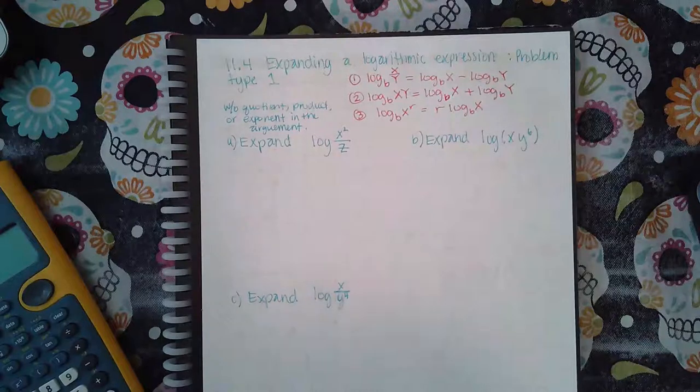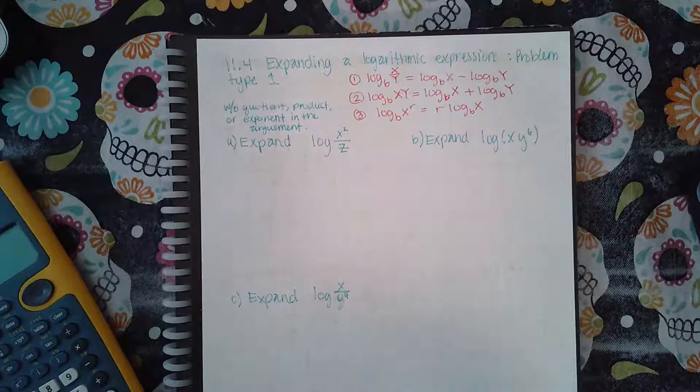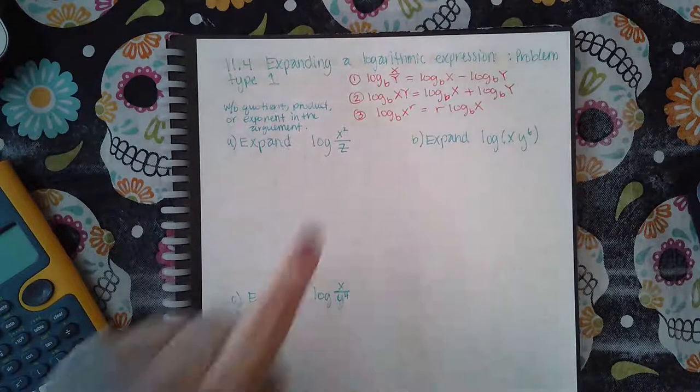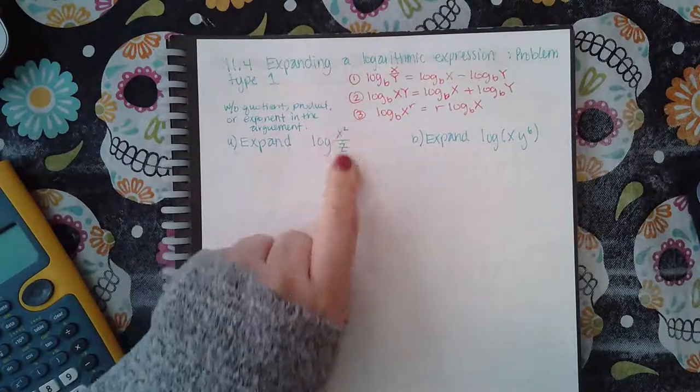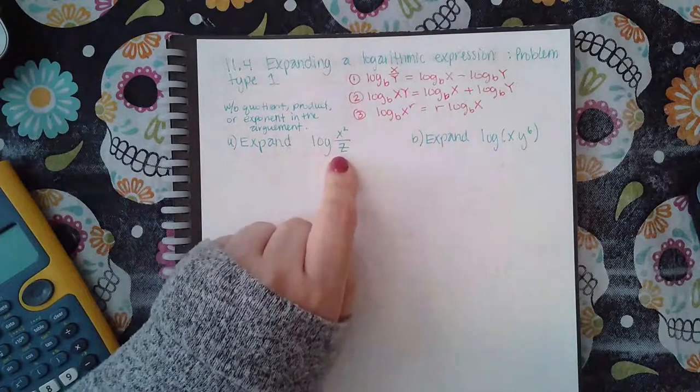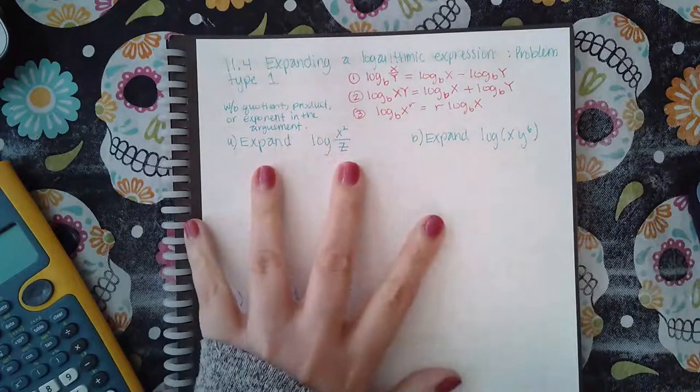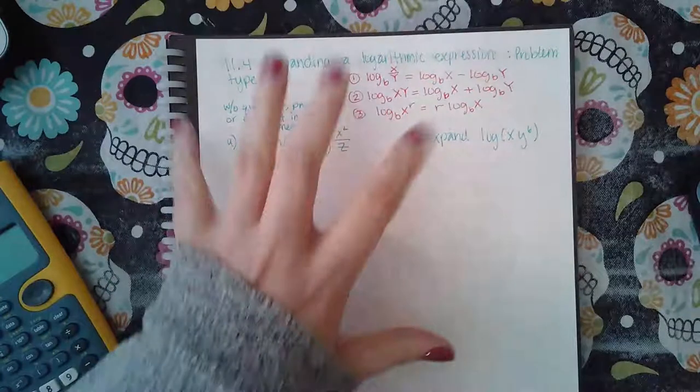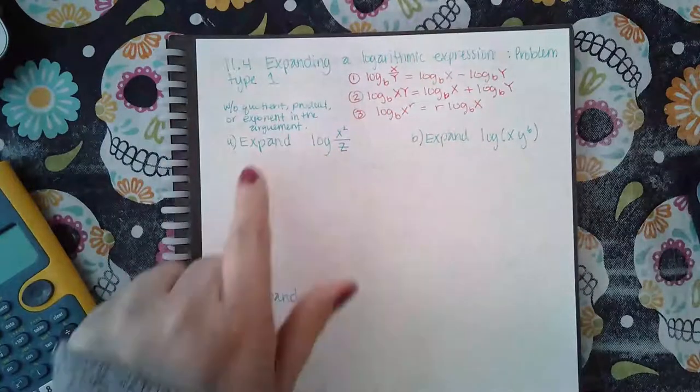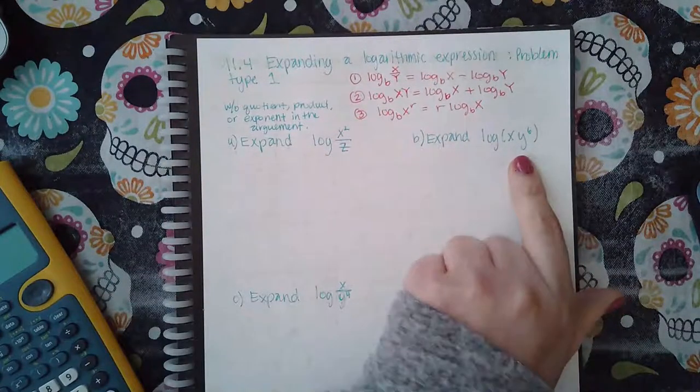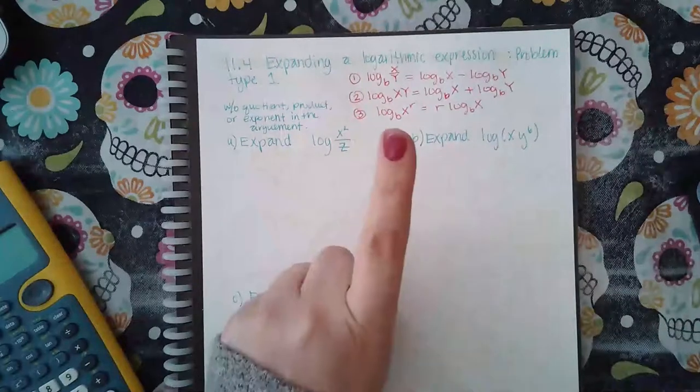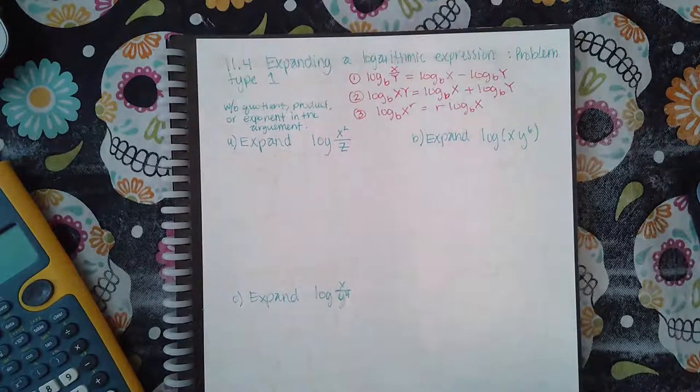They're going to ask you to expand a logarithm expression, so you have one log with some algebra going on in there, and then they want you to use these properties to expand it out to multiple logs. And they'll ask you to do the reverse, which is to compress it, so they'll give you a bunch of logs and you've got to rewrite it so that you're just using one log. Those are the two types of problems that you'll see in using the properties.